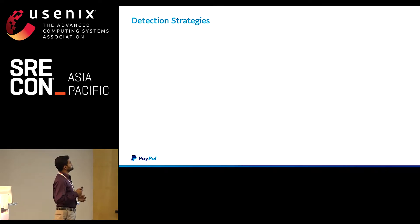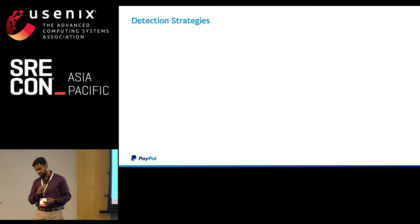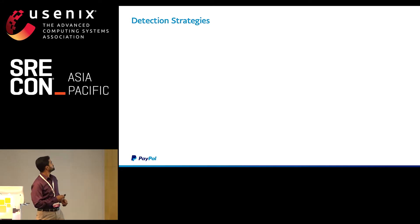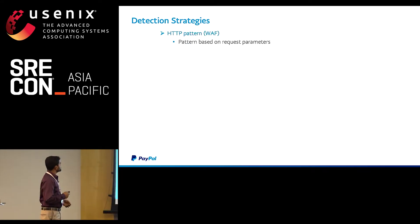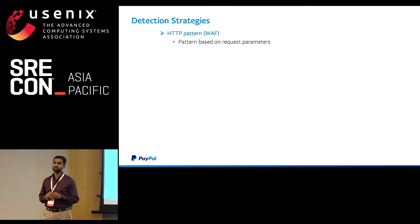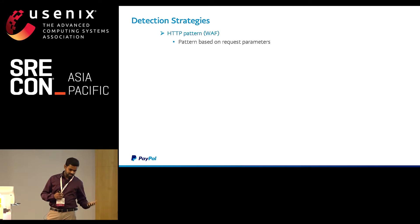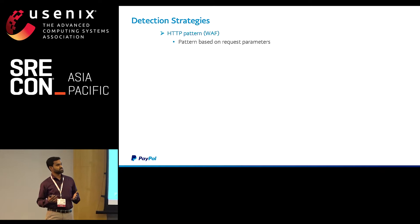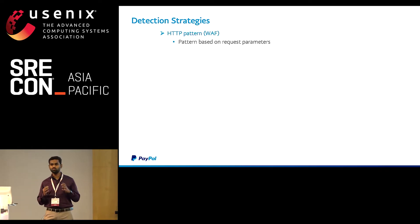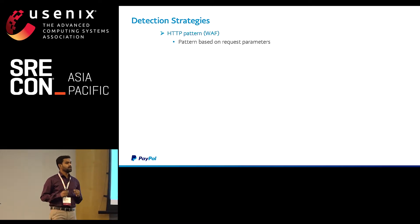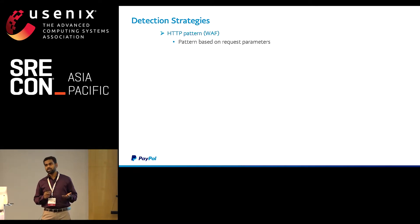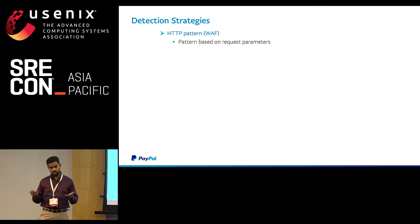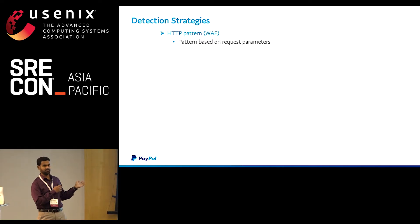Let's look at detection strategies we can build at this layer. The first is pattern-based detection. You scan all incoming requests and try to find patterns. If you find an anomaly pattern that is malicious, you compare it with incoming requests, and if an incoming request matches, you treat it differently — you can block it or apply another action, which we'll cover in mitigation strategies. This is more closely aligned with what we call WAF, or Web Application Firewall.